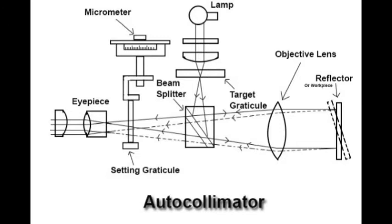Now if the reflecting surface is tilted by an angle theta, then the reflected ray makes an angle 2 theta with the incident ray. The different parts of the auto collimator are: first, the light source, which is used to generate light rays so that they reach the reflector. Next, the reflecting surface, which acts as the workpiece for the auto collimator — the angle of tilt of this reflecting surface is to be measured. Next, the diverging lens, also known as the objective lens, which is used to parallelize the light rays coming through the beam splitter so that parallel light rays reach the reflector.